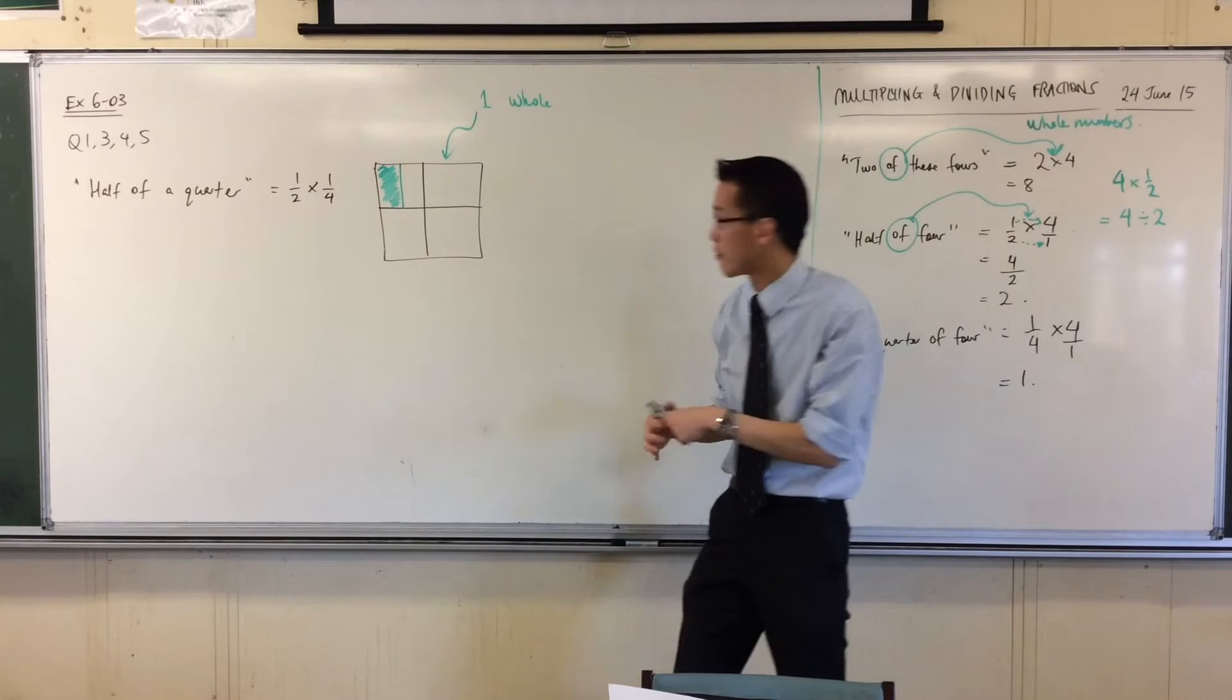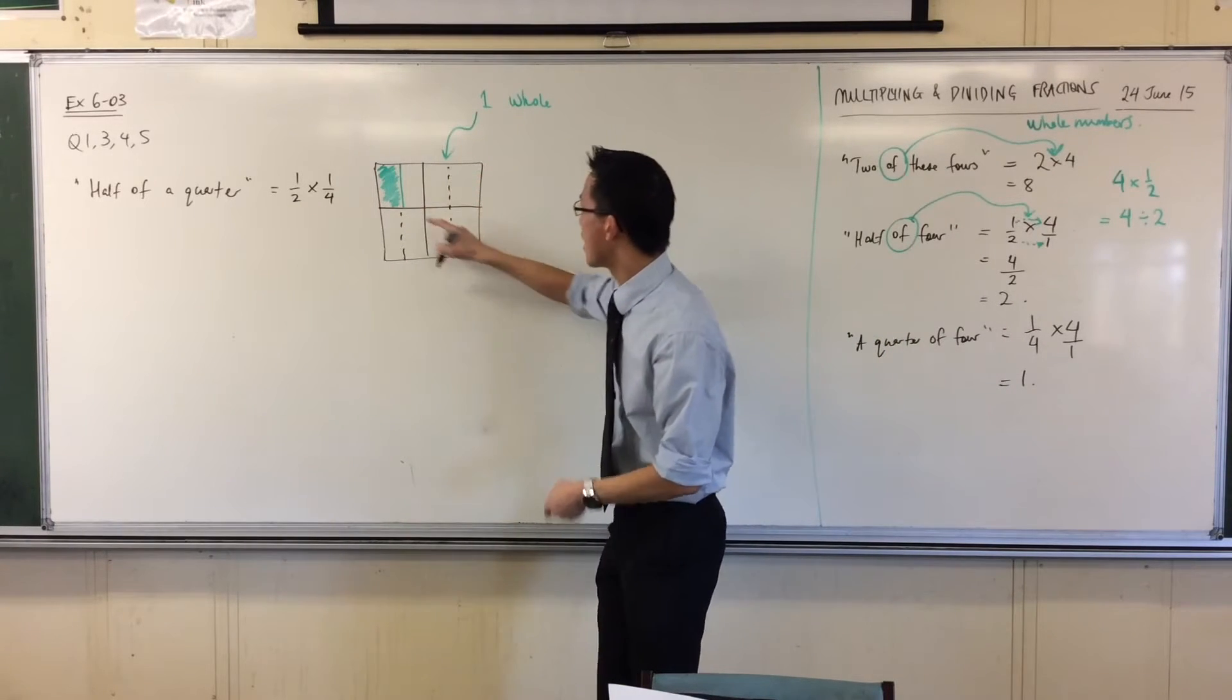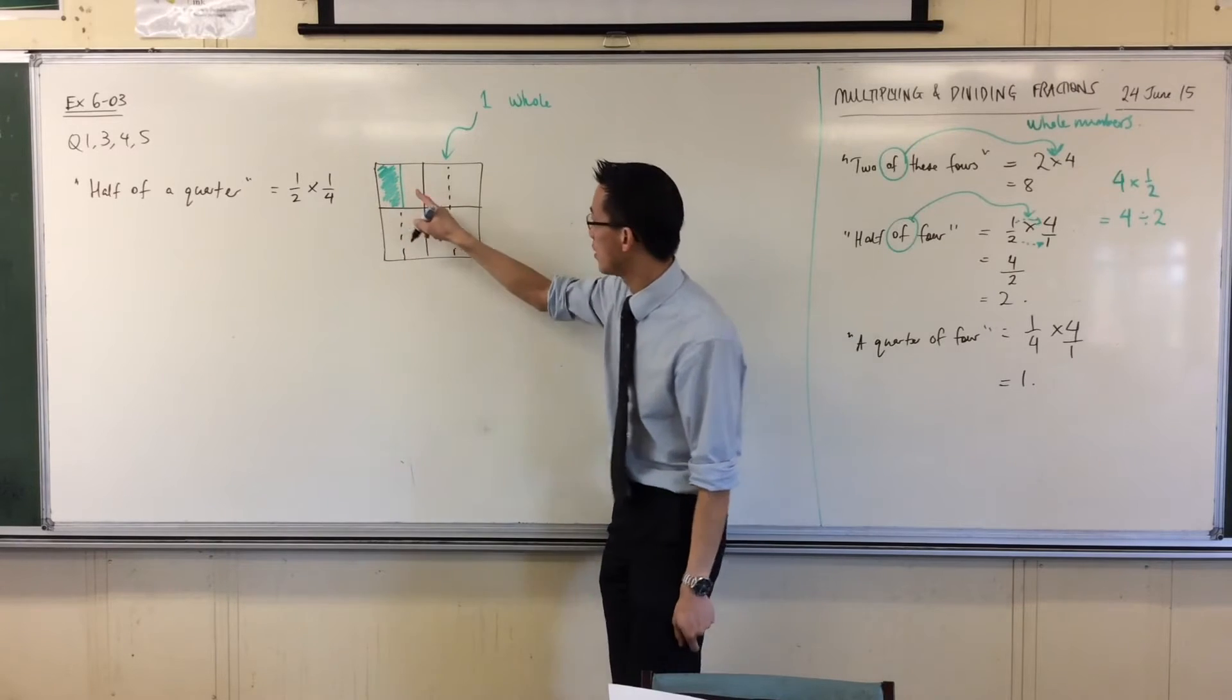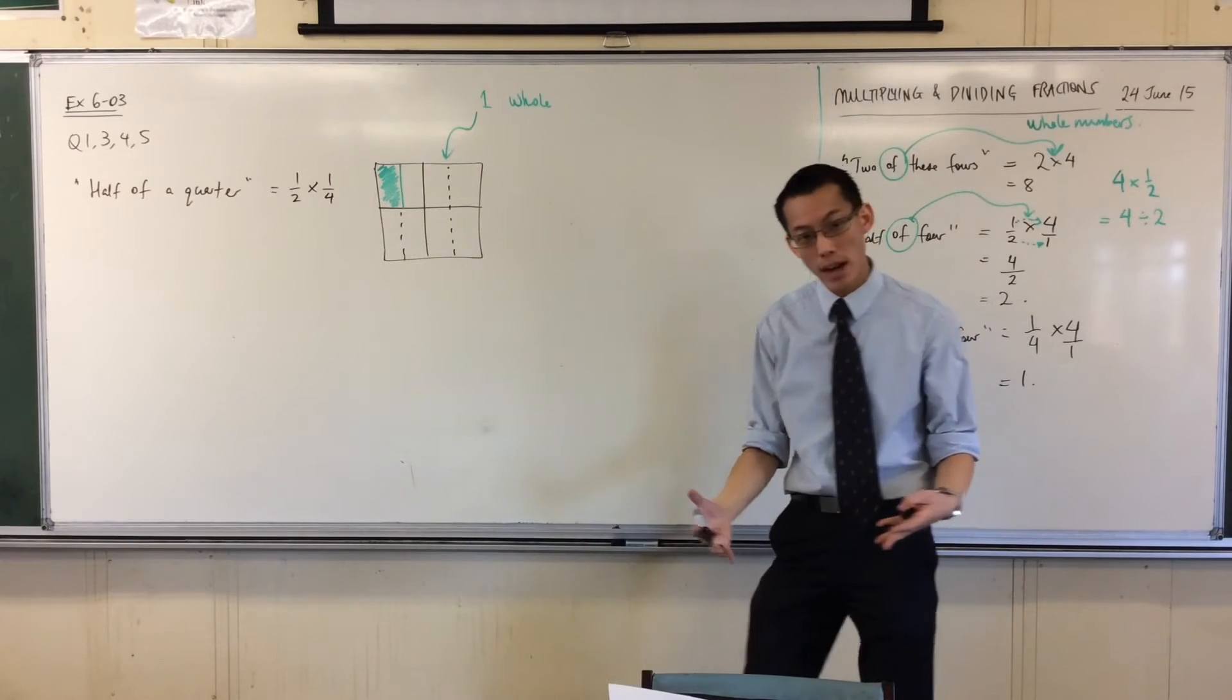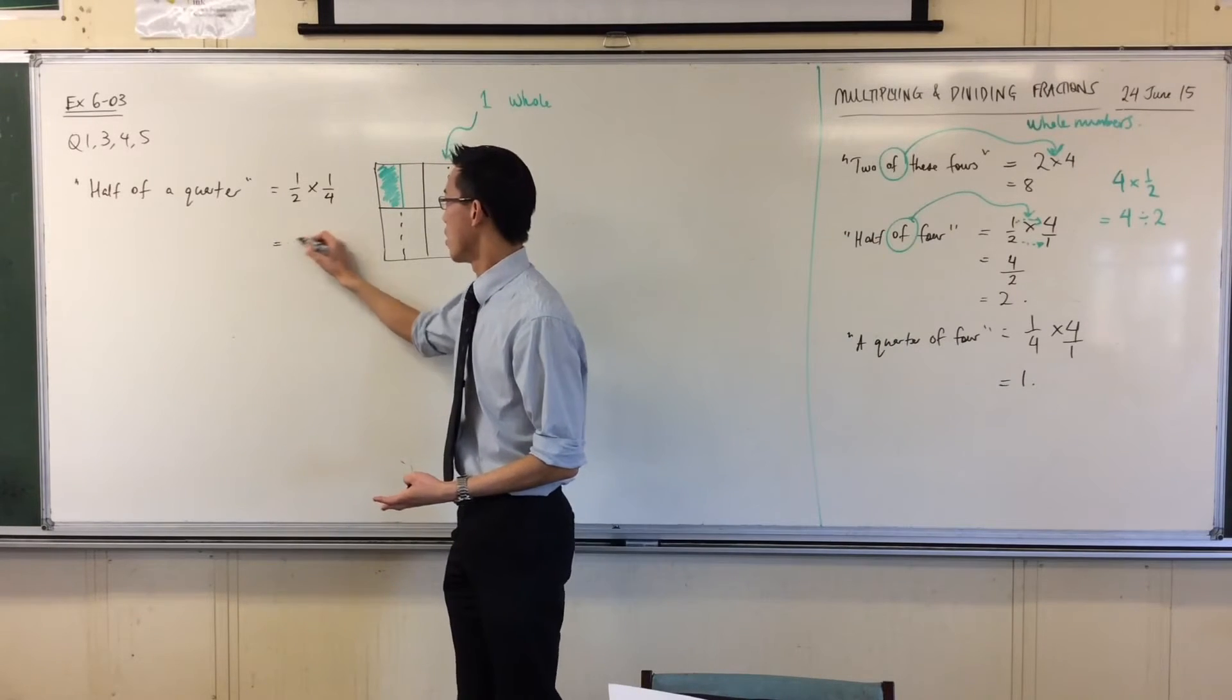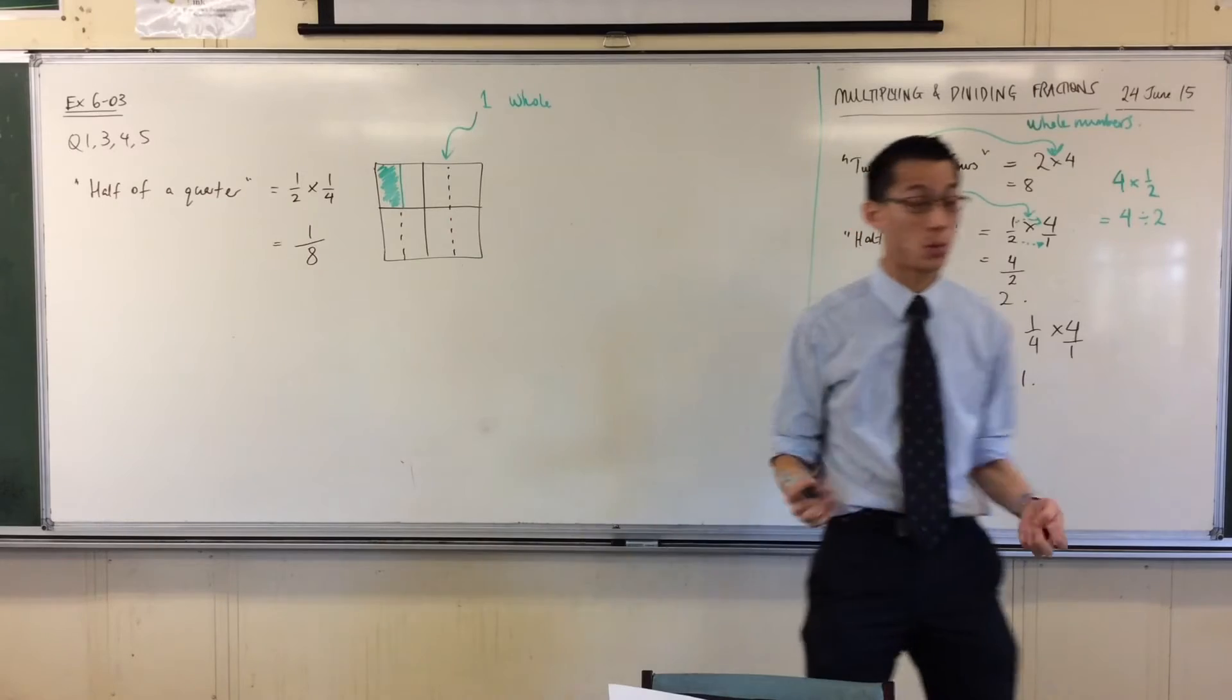Now, see this green rectangle I've got here? How many of these green rectangles can I fit in the whole? Eight. I can fit eight, right? Like if I put a few more lines in, you can see I've got eight of these. There's one, two, three, four, five, six, seven, eight. So in green, what I have shaded is one eighth, because there are eight of them in the whole. So it's one eighth, right?